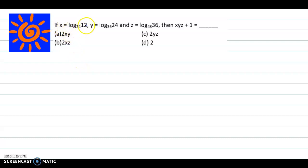If x is equal to log 12 to the base 24, y is equal to log 24 to the base 36, and z is equal to log 36 to the base 48, then xyz plus 1 is equal to what?